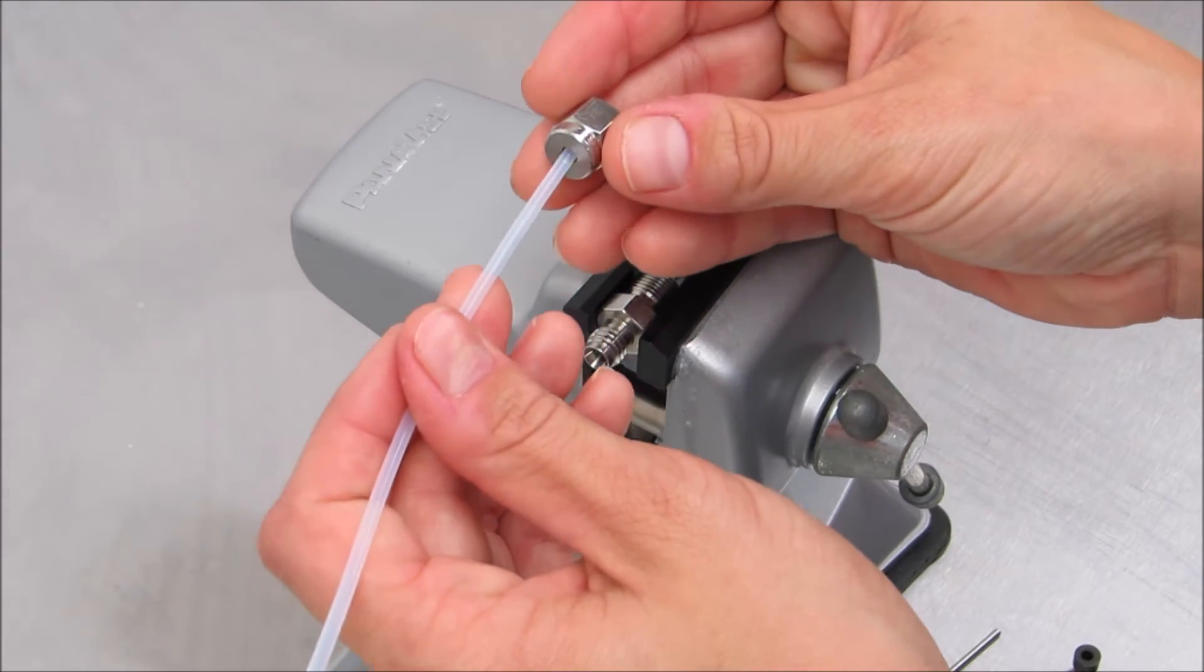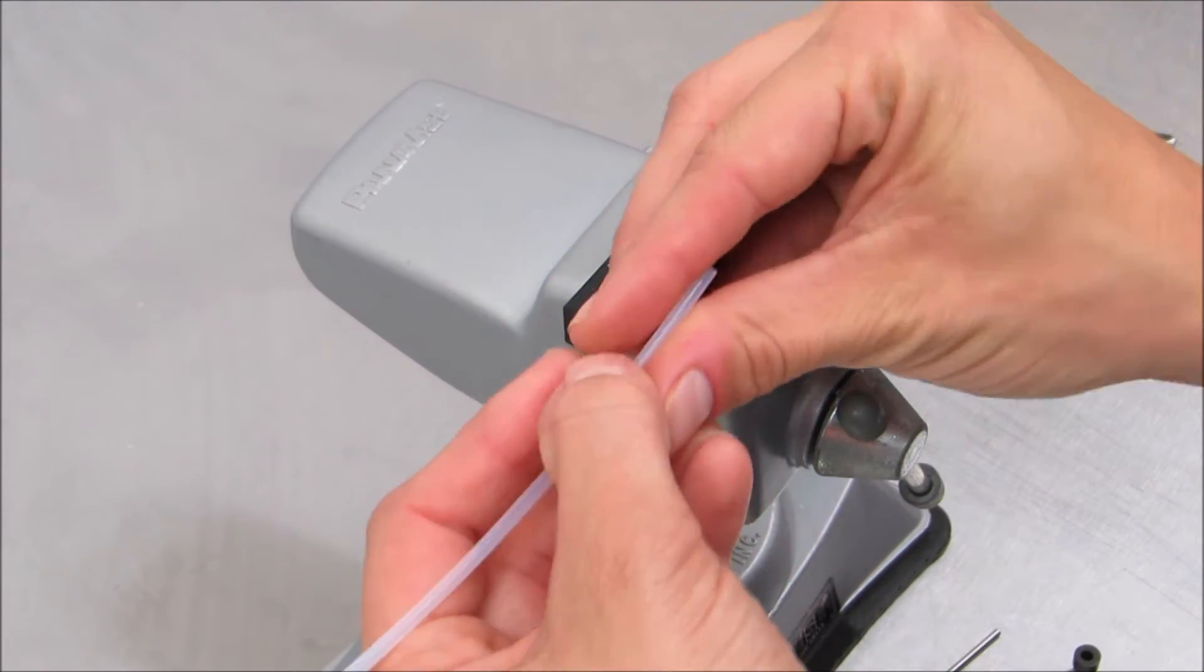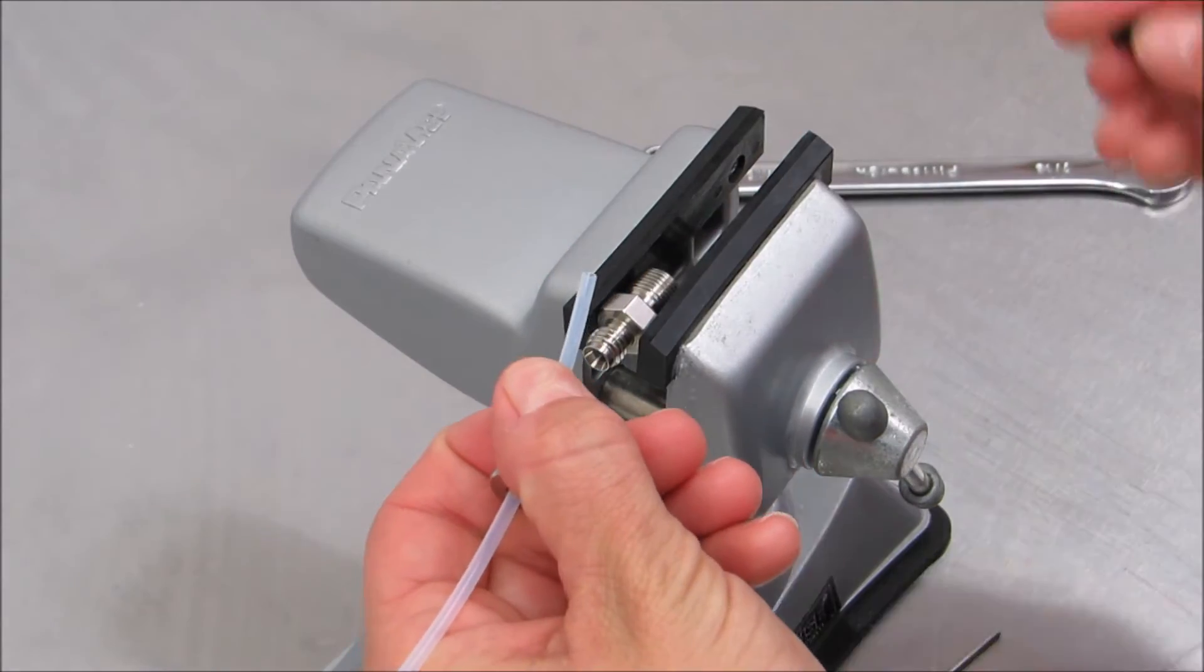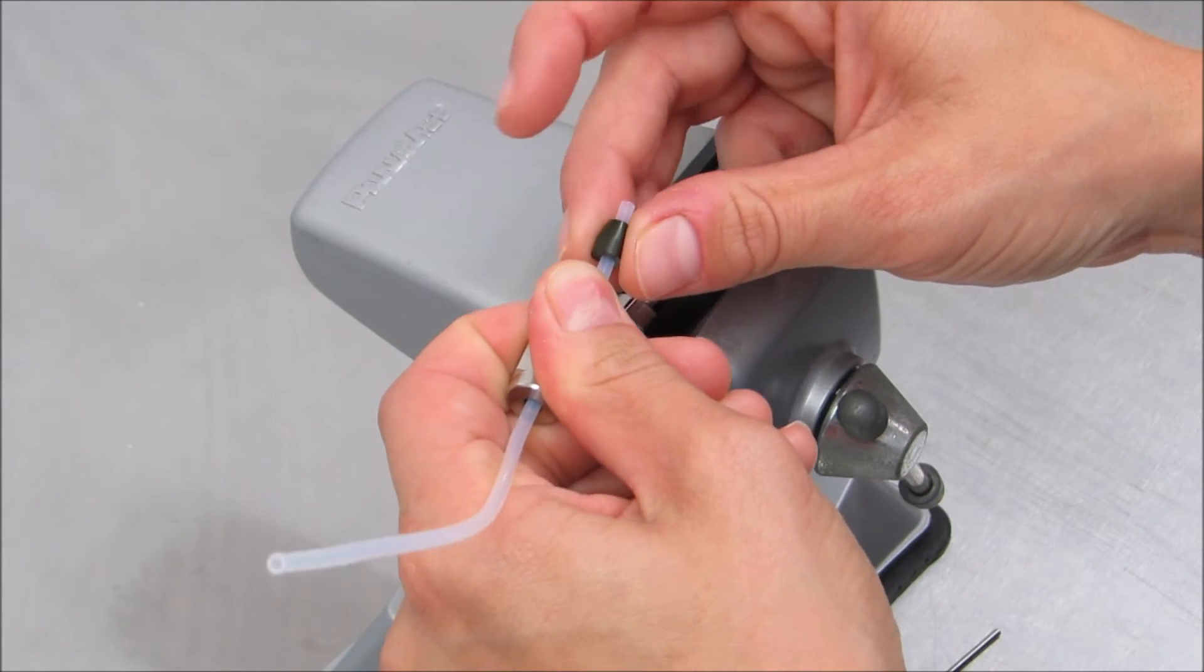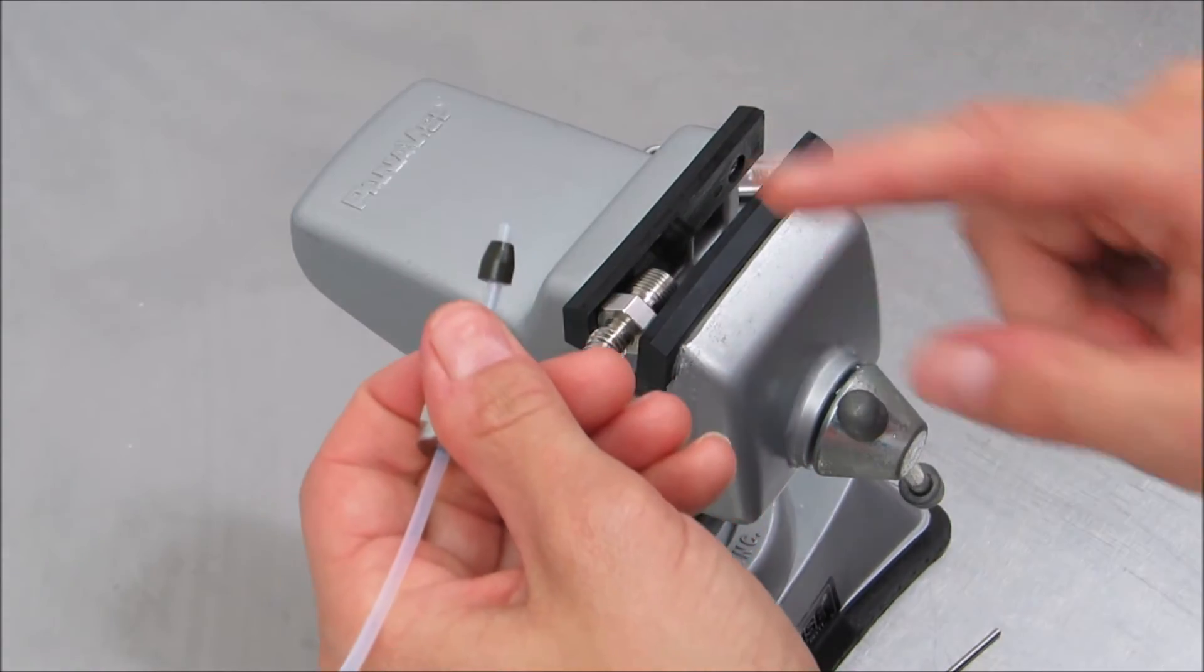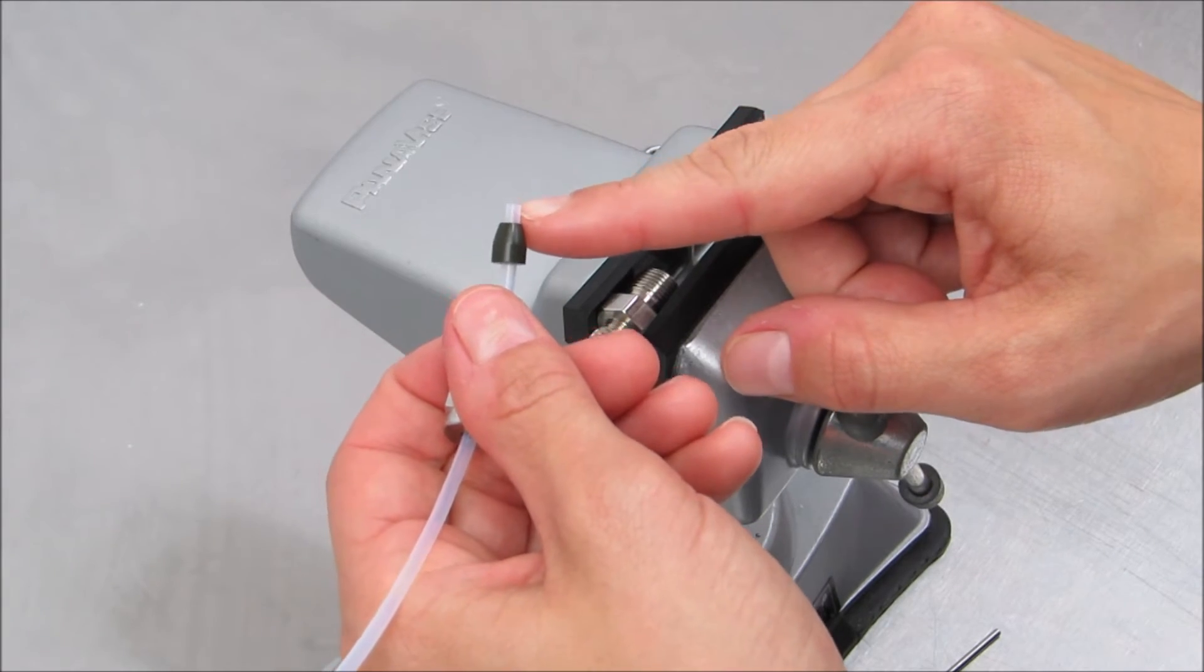First, slip the compression nut onto the PTFE tubing. Then, insert the PTFE tube into the ferrule. The tubing should protrude past the tapered end of the ferrule by about an eighth of an inch or more.